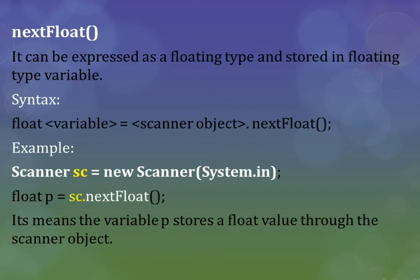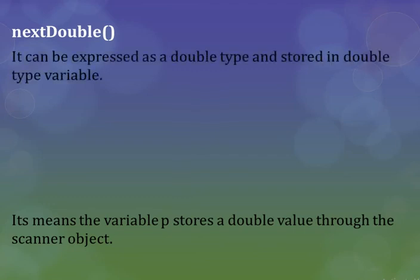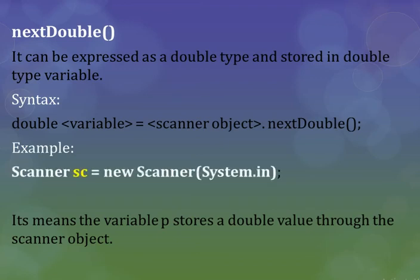nextDouble() - it can be expressed as a double type and stored in a double type variable. The syntax is: variableName = scannerObject.nextDouble(); To use this, first create a Scanner object: Scanner sc = new Scanner(System.in), then use sc.nextDouble() to read a double value.